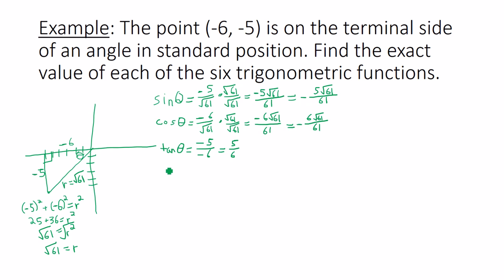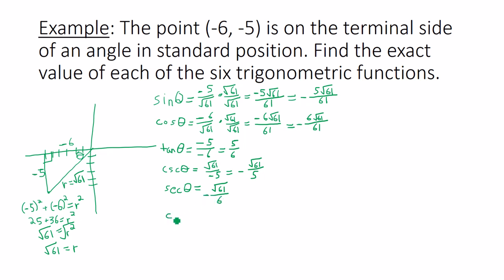Cosecant is the reciprocal of sine. Sine was negative 5 over square root of 61, so cosecant is square root of 61 over negative 5. Secant is the reciprocal of cosine — cosine was negative 6 over square root of 61, so secant is square root of 61 over negative 6. Cotangent is the reciprocal of tangent — tangent was 5 over 6, so cotangent is 6 over 5. Those are the six trig function values at angle theta. Note that four of them are negative and two are positive.